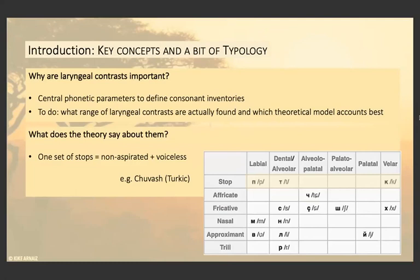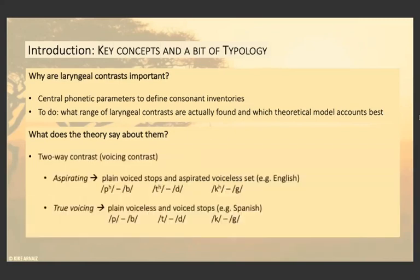I would like to briefly talk about what the typology says about laryngeal contrasts. If a language has one set of stops, then it would be as in Chuvash — non-aspirated and voiceless. If it has a two-way contrast, then the contrast element would be in the voicing. This can be in aspirating languages such as English, with one of the stops being aspirated, or true voicing like Spanish, when there's just no aspiration.